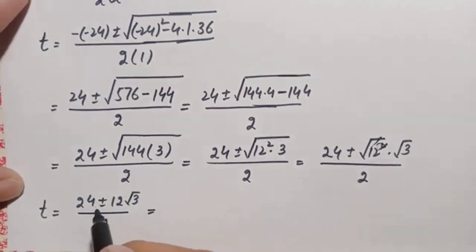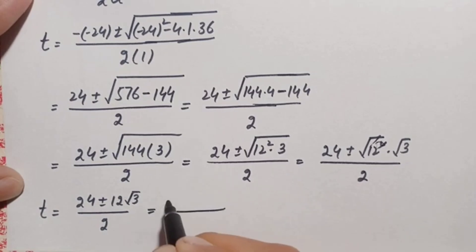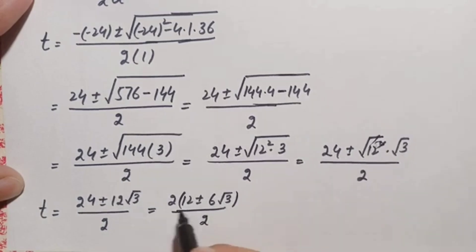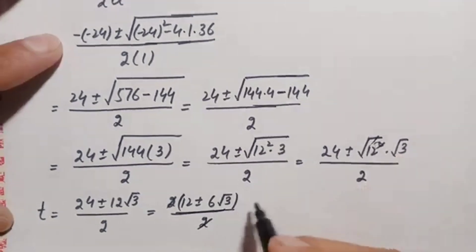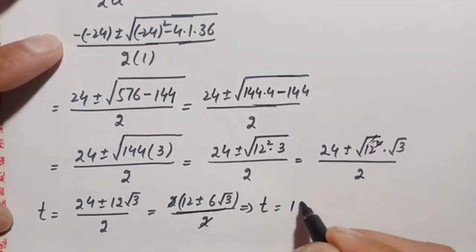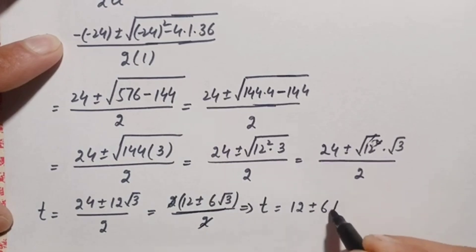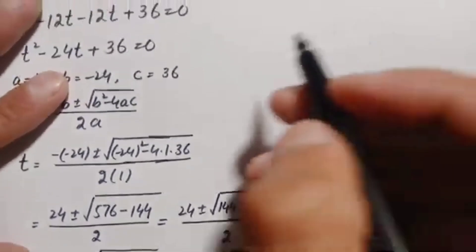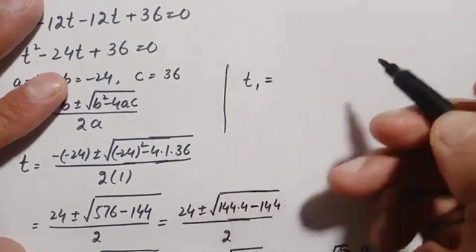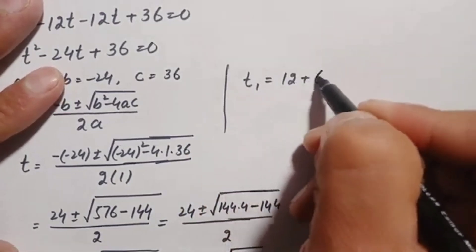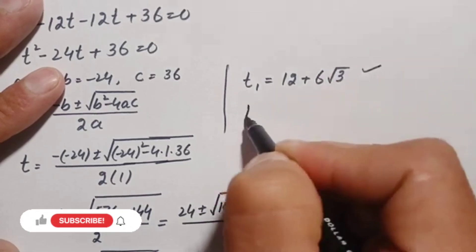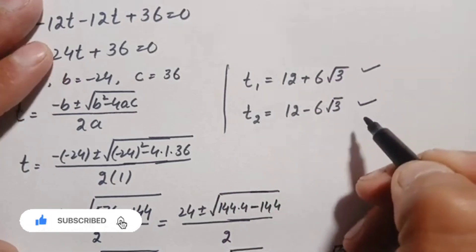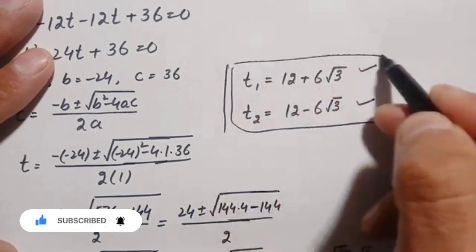Taking 2 common from the numerator gives 12 plus or minus 6 times square root of 3, divided by 2. The two cancels, so the final value of t is: t equals 12 plus or minus 6 times square root of 3. The two possible solutions are: t₁ equals 12 plus 6 times square root of 3, and t₂ equals 12 minus 6 times square root of 3.